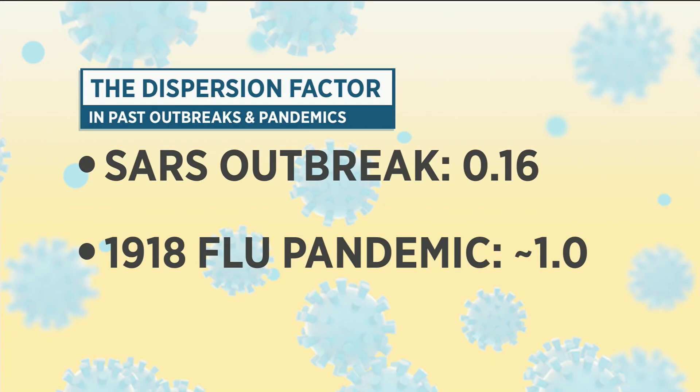This starts with something called the dispersion factor, which is an equation represented in a K value of zero to one. You're going to have to explain all this to me. A 2005 study of the SARS outbreak found a K value of 0.16. On the other hand, the K value in the 1918 flu pandemic was thought to be right around one.